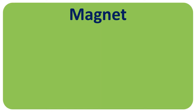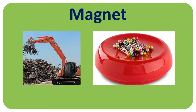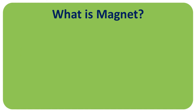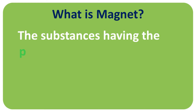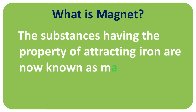In both examples we used the word magnet. Because of the magnet, the crane was able to separate the iron objects, and iron pins cling to the pin holder. So the question is: what exactly is a magnet? A magnet is a substance having the property of attracting iron.